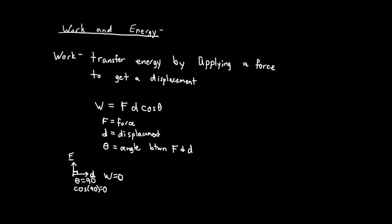When your force and displacement are perpendicular, you get no actual work. If the force and displacement are both parallel — acting in the same direction — then the angle is zero, and the cosine of zero is one. In that case, your work is at its maximum value and work is positive.